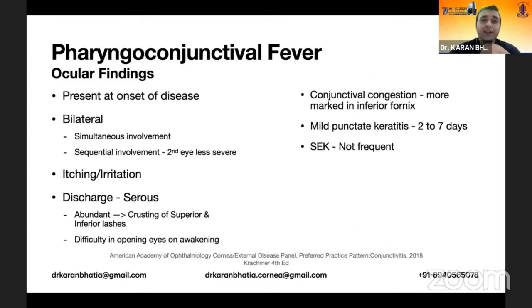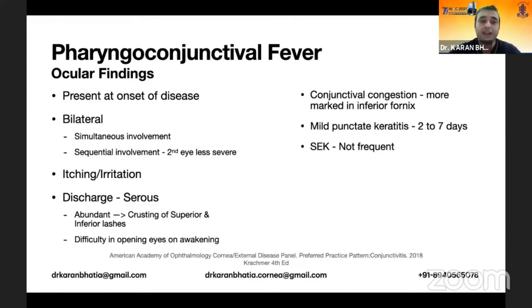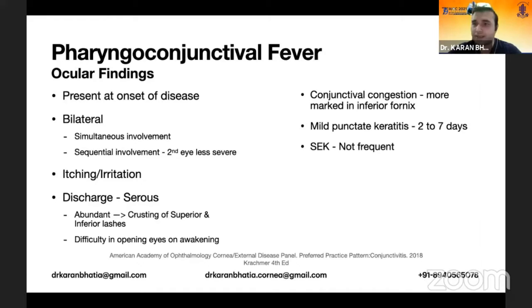It is generally a bilateral involvement, whether simultaneous in both eyes or sequential, with the second eye less severely involved. The most common complaint is itching and irritation with a serous discharge. The conjunctival condition is more marked in the inferior fornix, and punctate keratitis can be seen, but subepithelial keratitis is not frequent.